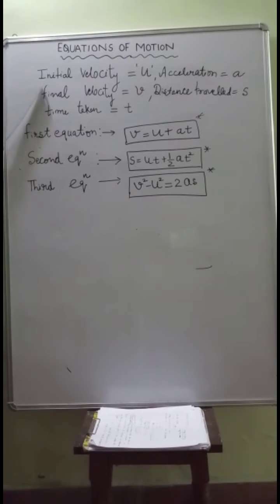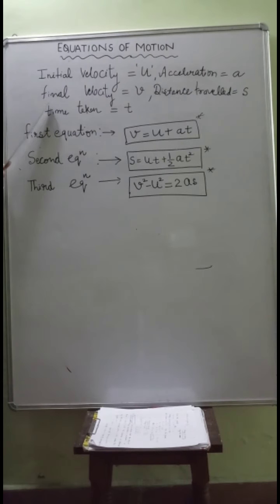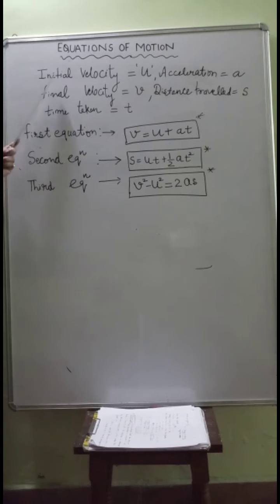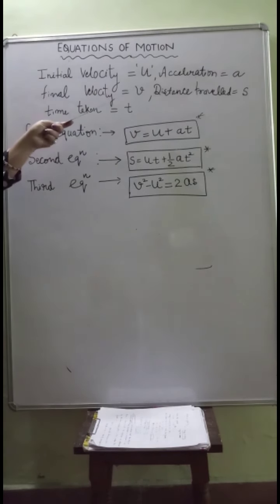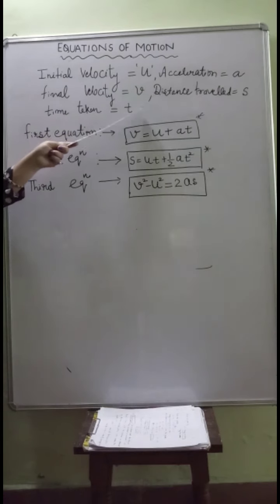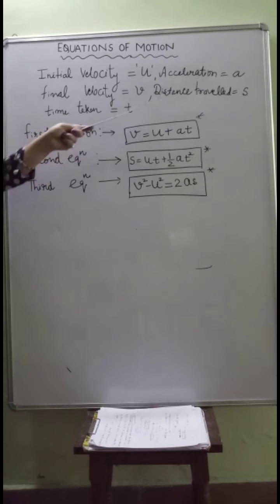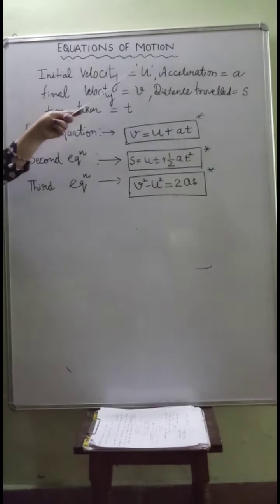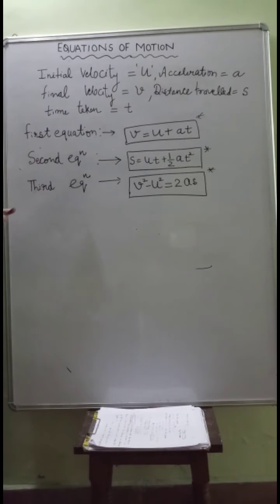We have learnt that initial velocity of a moving object is represented by u, its final velocity is represented by v, the time taken in changing the speed is represented by t, acceleration is represented by a, and distance travelled is represented by s. If you relate these quantities u, v, t, a and s, you get three equations which are called equations of motion.